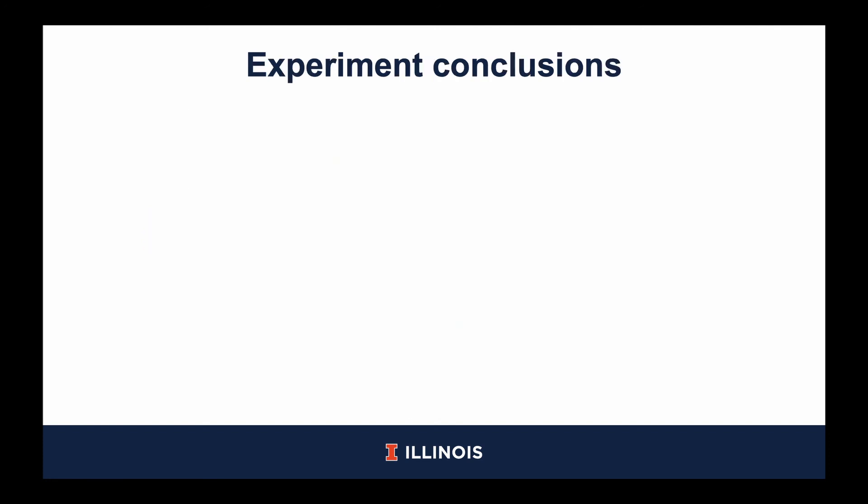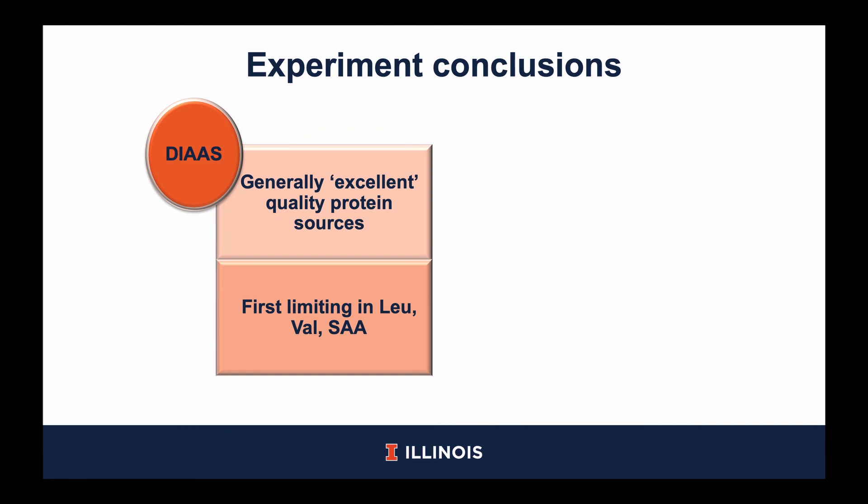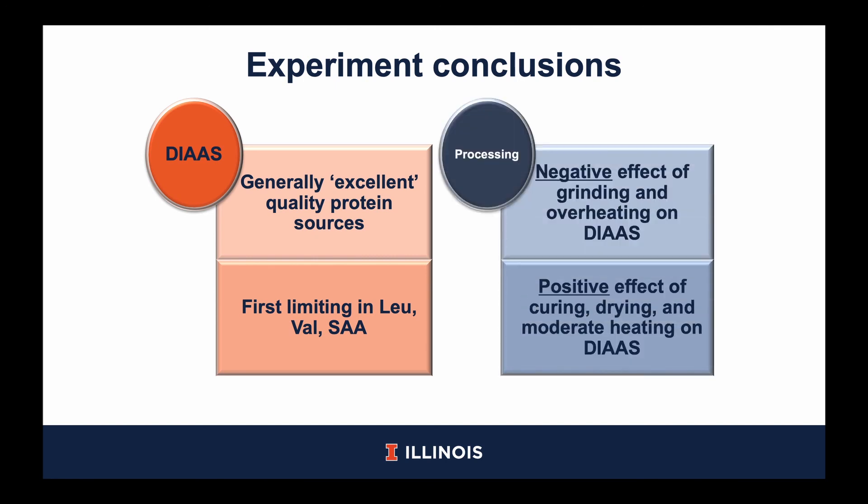For the second experiment, we can conclude that based on DIAAS, these beef products are generally excellent sources of protein, and the amino acids in least concentration when compared with human amino acid requirements are leucine, valine, and sulfur amino acids. For processing, there was a negative effect of grinding and overheating on DIAAS. In contrast, there was a positive effect of curing, drying, and moderate heating on DIAAS.